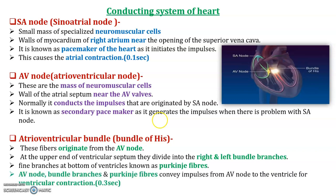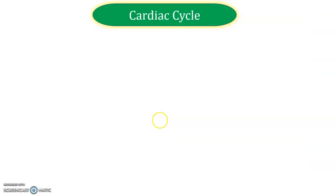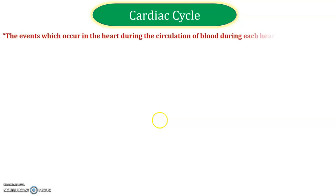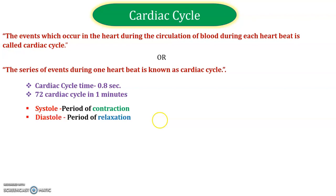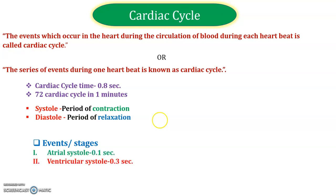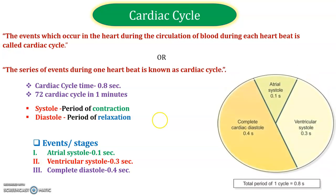Now let us discuss the cardiac cycle. The cardiac cycle refers to the events occurring during one heartbeat and lasts 0.8 seconds — meaning 72 cardiac cycles per minute. It contains systole and diastole: systole means the period of contraction, diastole means the period of relaxation. The events include: atrial systole (0.1 second), ventricular systole (0.3 second), and complete diastole (0.4 second).